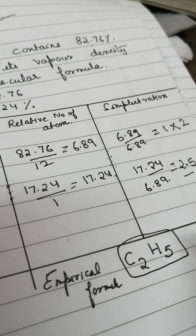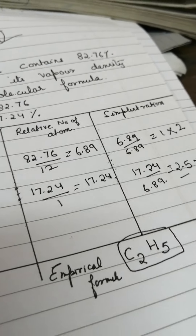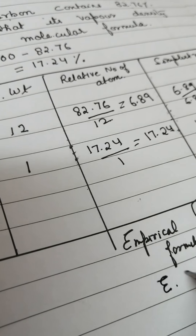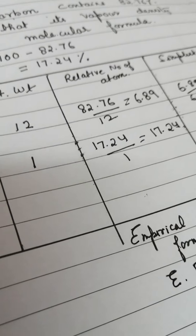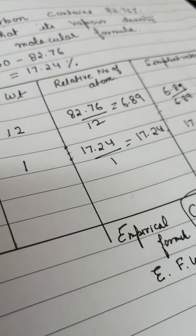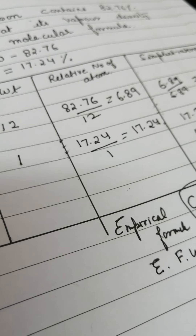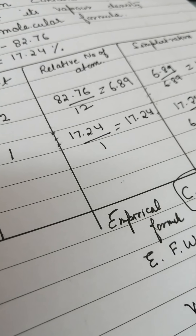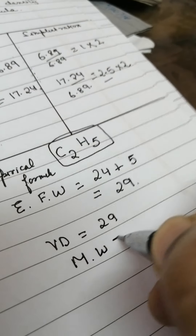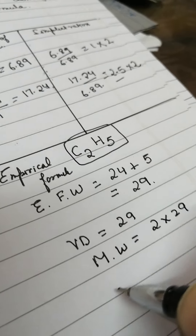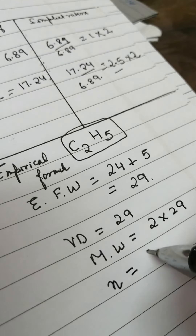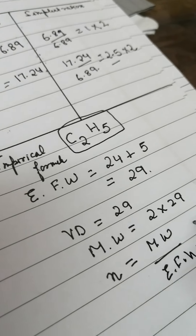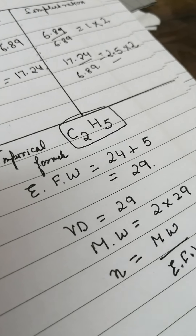Now we have to calculate the molecular formula, for which we need the value of N. First we calculate the empirical formula weight: C2H5 gives (2×12) + 5 = 24 + 5 = 29. The vapor density was given as 29, so the molecular weight equals 2 × 29 = 58. N equals molecular weight divided by empirical formula weight.